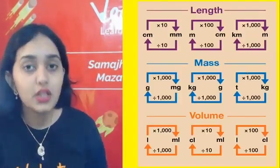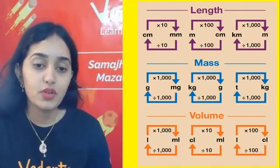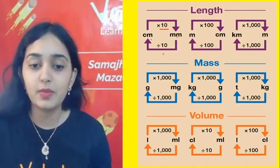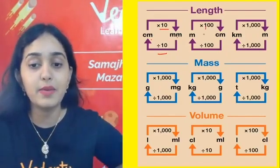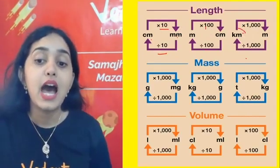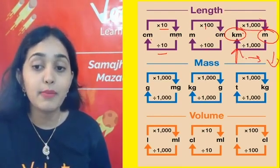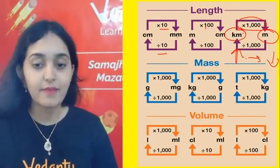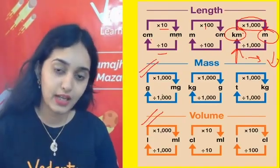Now, some conversions of measurements we use in daily life. To convert centimeters to millimeters, multiply by 10. To convert millimeters to centimeters, divide by 10. Similarly, multiply by 100 or divide by 100, and multiply by 1000 or divide by 1000 for other units. Always remember: converting higher quantity to lower — we multiply. Converting lower to higher — we always divide. The same relations apply for mass and volume as well.